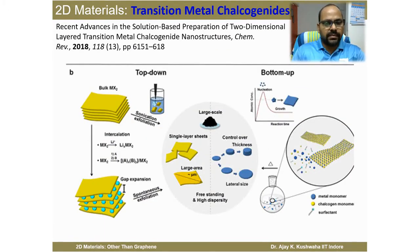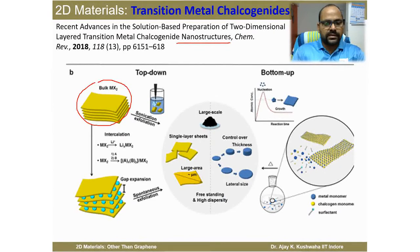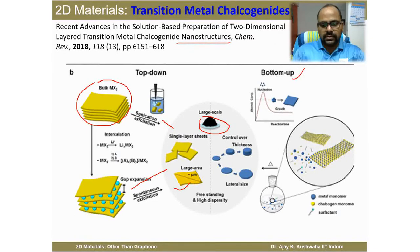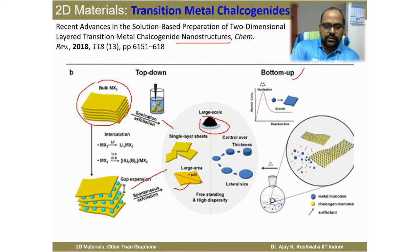This figure gives a clearer idea of top-down and bottom-up approaches, taken from a review article. If we have bulk MoX₂, it can be exfoliated by sonication or by intercalation to achieve a sheet. The top-down advantage is achieving large-area, large-size sheets. In the bottom-up approach, nucleation and then growth occur where the metal and chalcogenide atoms react at vacuum or very high temperature conditions, forming the transition metal chalcogenide sheet. The bottom-up approach offers better control over lateral size and thickness.